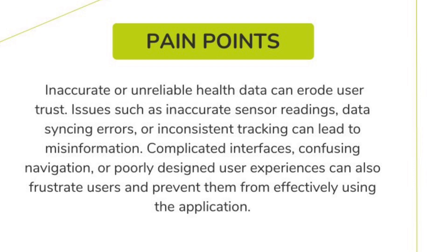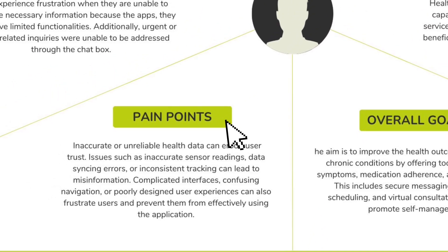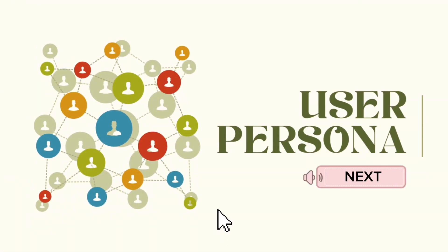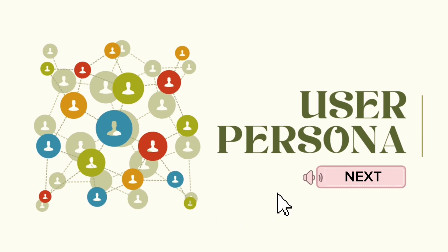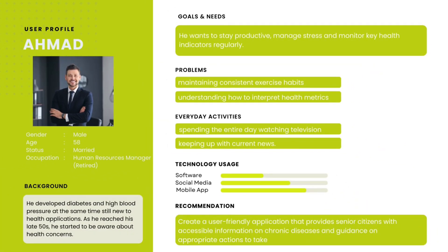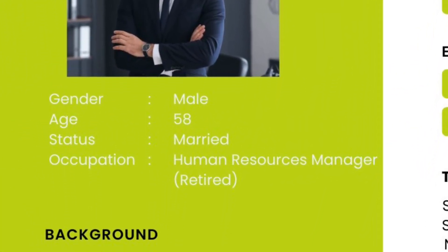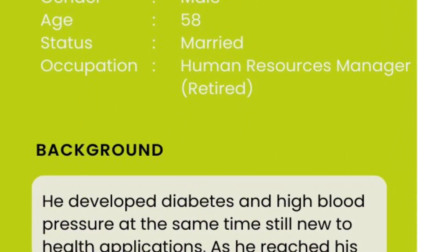Next, the user persona will consist of four target users ranging from students to senior citizens. A user persona refers to a semi-fictional character that represents our ideal customer, and every design process begins with user research. First and foremost, let us present Mr. Ahmad — his age is 58, he is married, and he